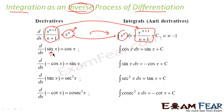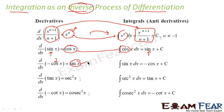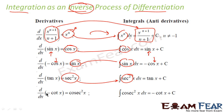Similarly, you differentiate sin x and you get cos x. So you integrate cos x and you get sin x. You differentiate minus cos x and you get sin x. So you integrate sin x and you get minus cos x. Similarly, you differentiate tan x and you get sec² x. So if you integrate sec² x, you get tan x. You differentiate minus cot x and you get cosec² x. You integrate cosec² x and you get minus cot x plus c.